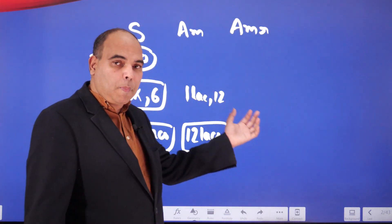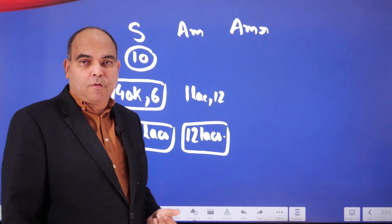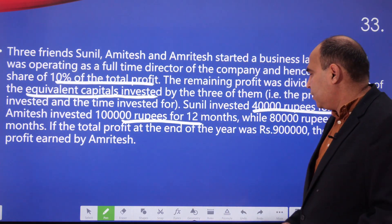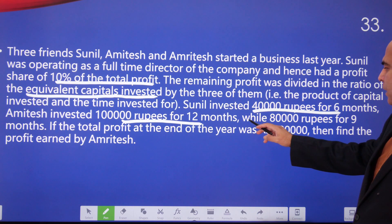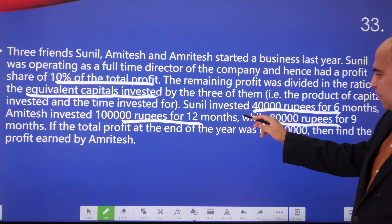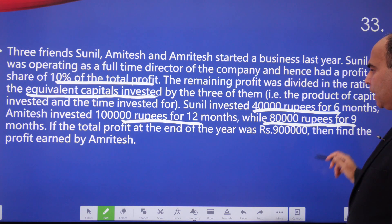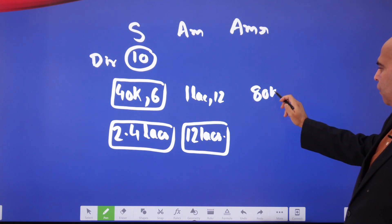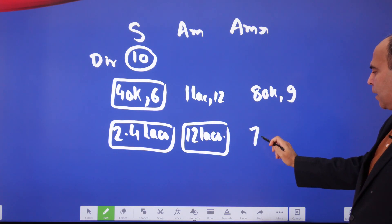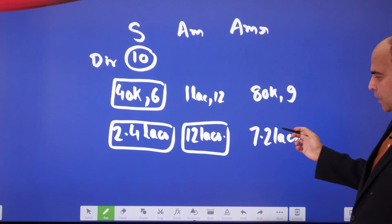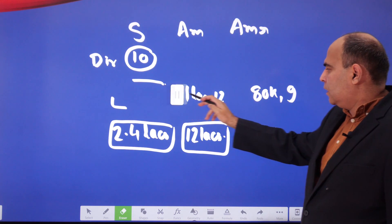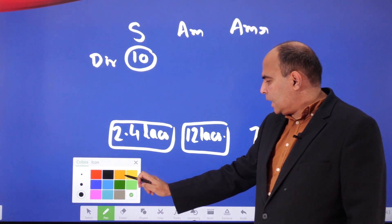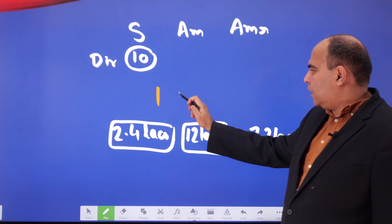It's just the multiplication of the capital invested multiplied by the number of months for which it is invested. Amritesh invested 80,000 for nine months, so his equivalent capital is 7.2 lakhs. If you think about this ratio, 2.4 lakhs to 12 lakhs to 7.2 lakhs is actually a ratio of 1:5:3.